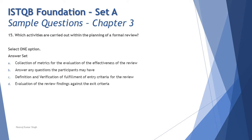The next question is number 15: which activities are carried out within the planning of a formal review process? A quick recap of the standard phases: first is planning, then kickoff (initiate review), then individual preparation, then issue communication and analysis as the fourth stage, and the fifth stage is fixing and reporting. This question is asking what activities happen specifically in the planning phase.